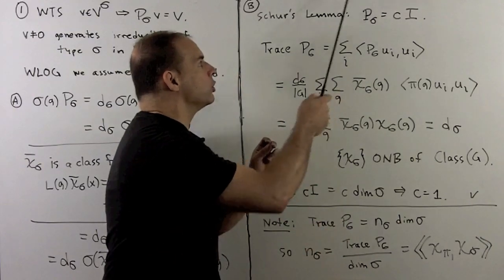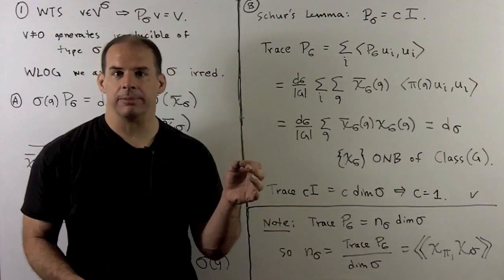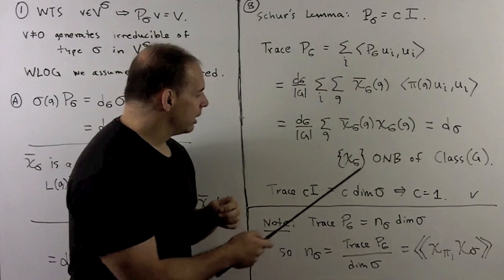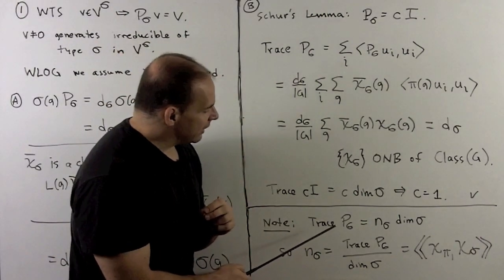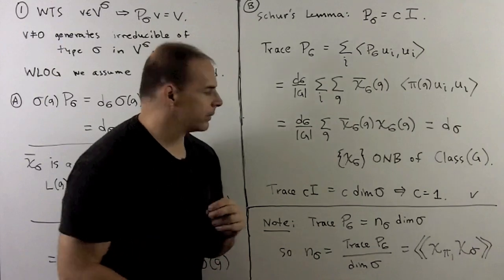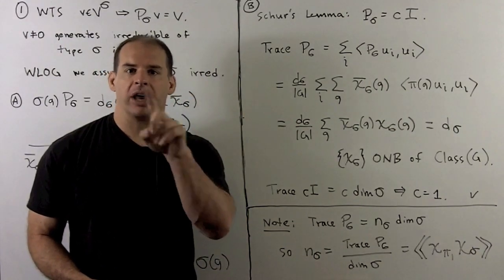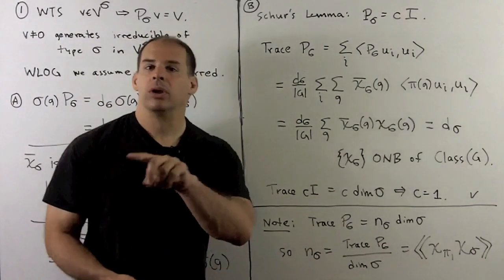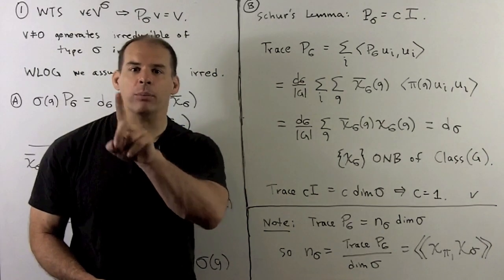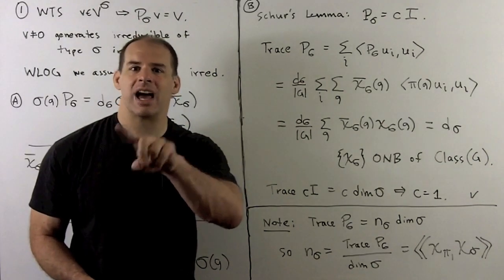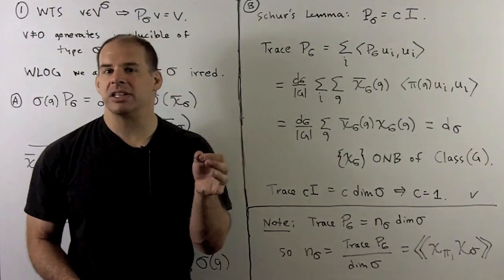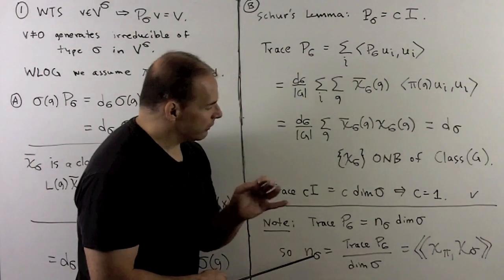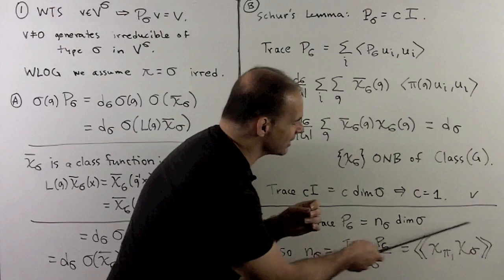So on our irreducible space, P sub sigma is the identity, and that extends to all types sigma. Another thing to note: if we take the trace of P sub sigma, we have a projection operator, so the trace is the dimension of the image. In this case that is the span of the sigma types, giving the multiplicity of sigma times the dimension. This provides another formula for multiplicities when we divide by the dimension. Recall we also have a formula using characters inside the L2 norm.